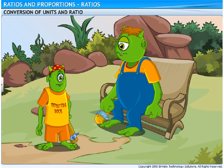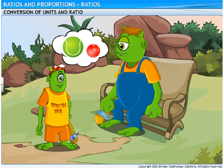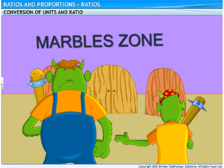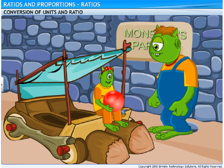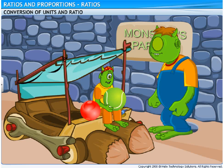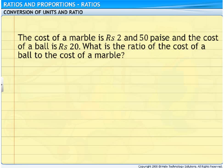Got you, Dad. Dad, could you please buy me a monster marble and a ball? Hefty would also like them. Come, let's go to the nearby shop and buy them. Here's your monster marble. It cost me 2 rupees and 50 paise. And here's your monster ball for 20 rupees. Bozo, can you now answer a question? The cost of the marble is 2 rupees and 50 paise, while the cost of your ball is 20 rupees. Tell me, what is the ratio of the cost of the ball to the cost of the marble?